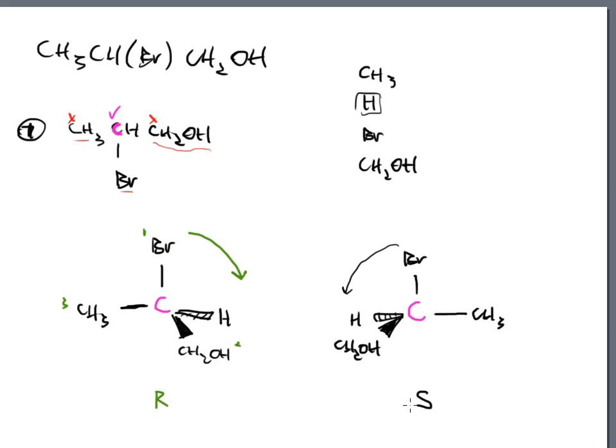For the mirror image: bromo group at the top is rank one, CH2OH is rank two, methyl group is rank three. The rotation goes counterclockwise, pointing to the left hand - therefore that is the S form. That's the answer to the question, and that's all there should be to this process right now: getting comfortable identifying chiral carbons and representing them in 3D as a right-hand and left-hand form.